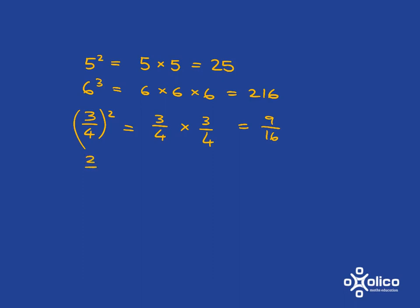And if we had 2 fifths cubed, it's just going to mean 2 fifths multiplied by itself 3 times, and 2 times 2 times 2 is 8, 5 times 5 times 5 is 125.